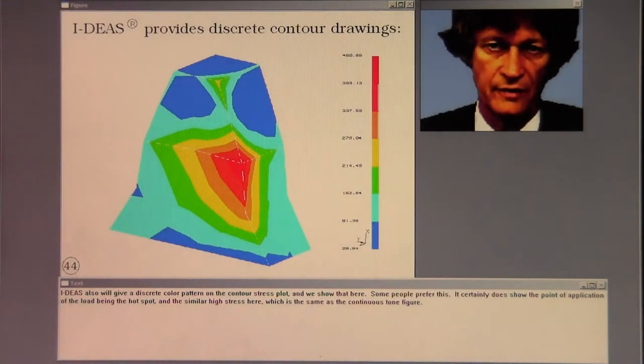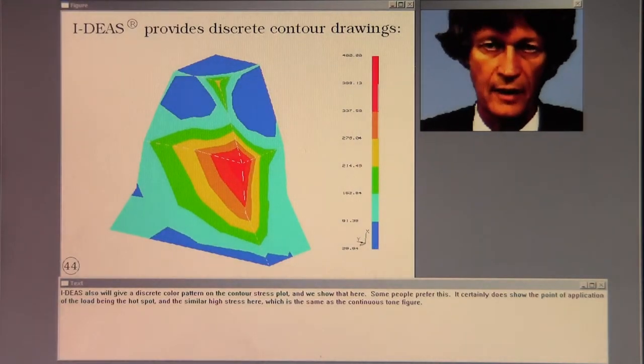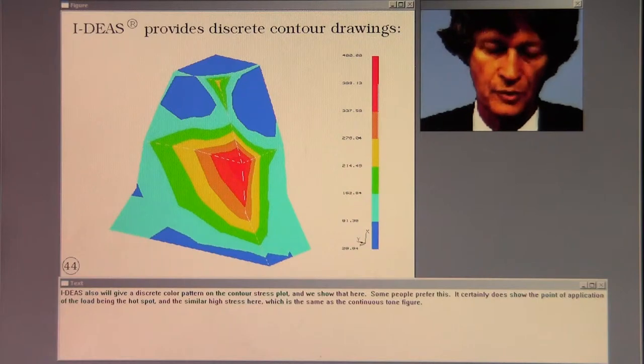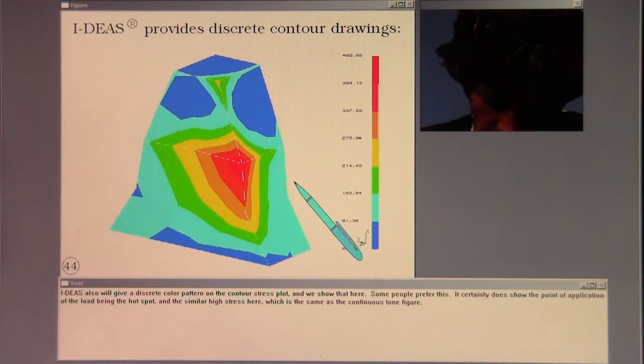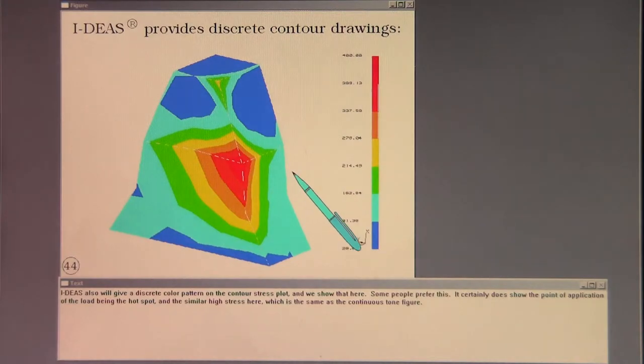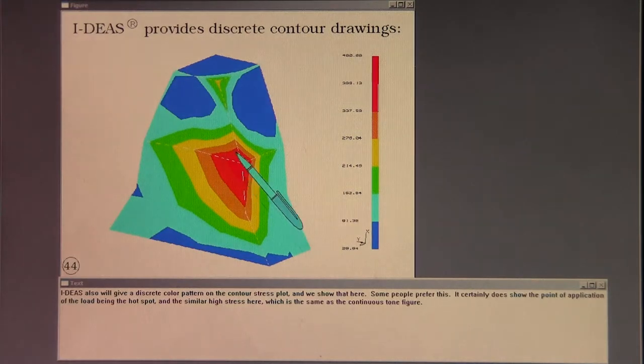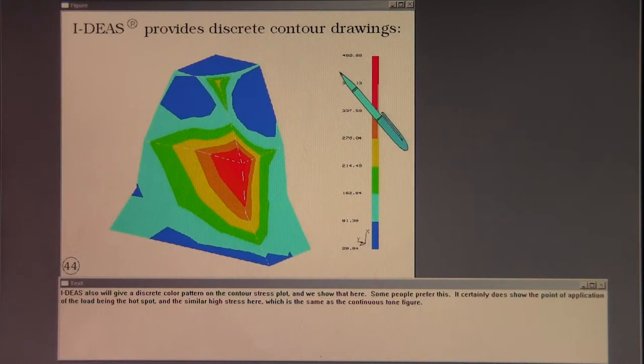Ideas also will give a discrete color pattern on the contour stress plot. And we show that here. Some people prefer this. It certainly does show the point of application of a load being the hot spot, and the similar high stress here, which is the same as the continuous tone figure.